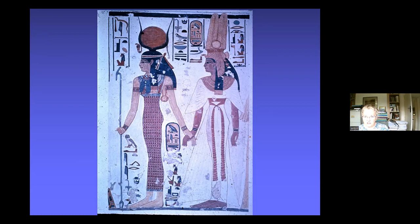Looking at a scene from the tomb of Queen Nefertari, you can see her in a white dress being led forward into the afterlife by the goddess Isis. If you look at the figures in detail, they are very peculiar — the heads are in profile, the body faces the viewer, and the legs and feet are again in profile. The arm of Queen Nefertari is back to front; the thumb is very clearly shown with the fingers.